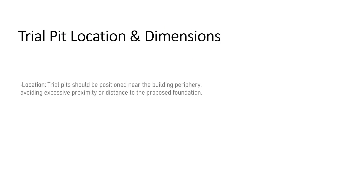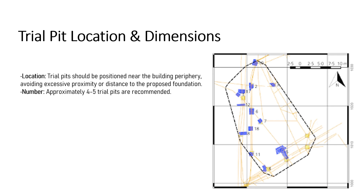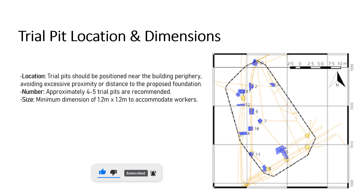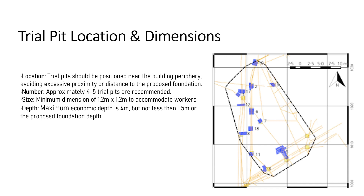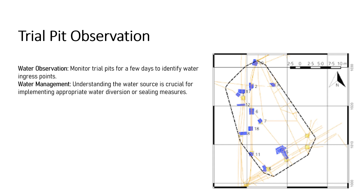The location of trial pits must not be too close or too far away from the proposed foundation location. Around 4–5 trial pits are excavated near the building periphery. The minimum dimension of the trial pits excavated is 1.2 x 1.2 m, to provide access for operators or workers. The maximum economic depth of the trial pits is 4 m and the minimum depth is 1.5 m, or the depth of the proposed foundation. Trial pits are observed for a few days to monitor any entry of groundwater, helping to understand any water passage and plan for future construction.